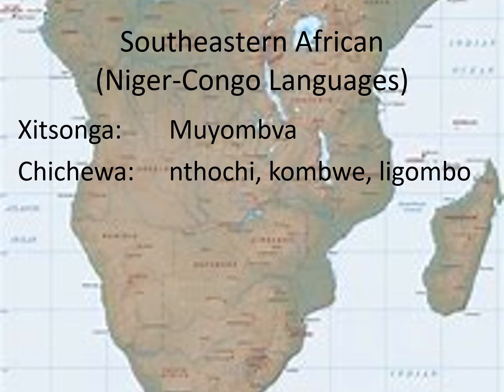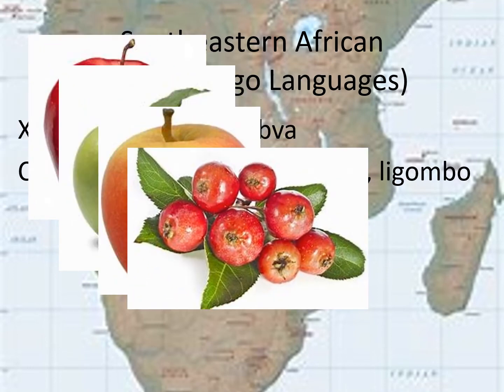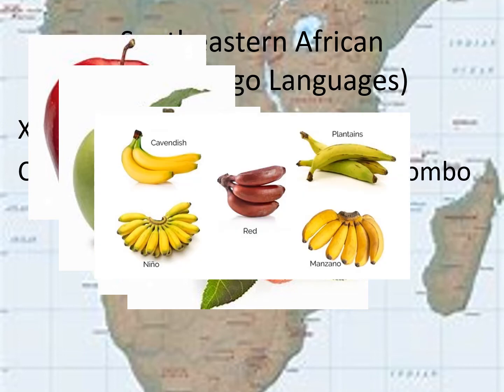In Chichewa, there are actually three ways to say banana. I'm not 100% certain why, but I have a few ideas. There are multiple species of banana, just like there are different species of apples. In Southeast Africa, bananas are much more culturally relevant food items — they are as important as hamburgers are in American culture. So I would not be surprised if these three words refer to different species or different ways bananas are prepared. Another theory is that many Niger-Congo languages have sub-dialects, and these could be different ways to say banana in different dialects.